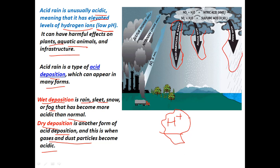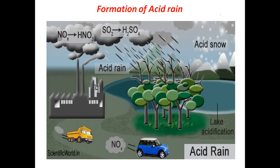Wet deposition includes acid snow and acid rain. These are formed when nitrogen oxides and sulphur dioxide are released into the atmosphere from factories, thermal power plants, and vehicles. These oxides of sulphur and nitrogen react with water in the atmosphere, leading to the formation of sulphuric acid and nitric acid.